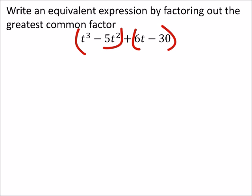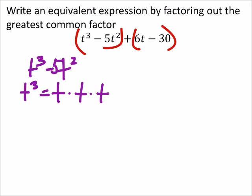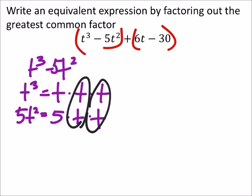So for example, if I saw t cubed minus t squared like this, a 5t squared - minus 5t squared. Well from this, we got the t cubed, which is just t times t times t. Then we've got 5t squared, which is 5 times t times t.